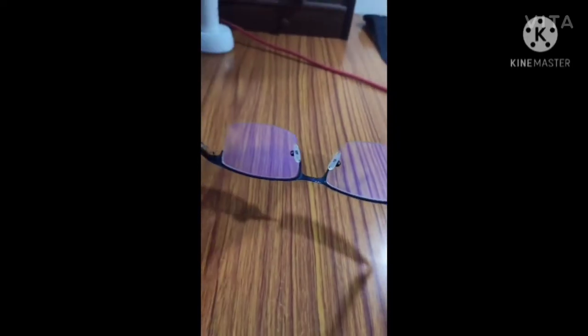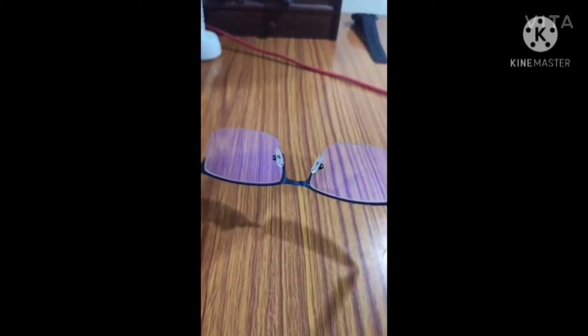Crizal Prevencia lenses show this famous light violet tint, on the other hand the Lenskart blue lens shows the common green reflection.